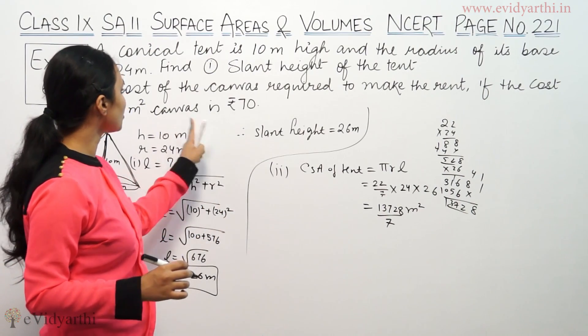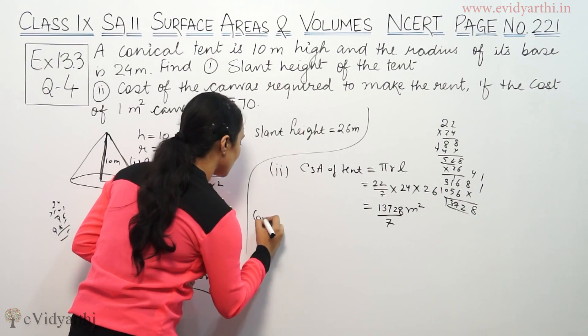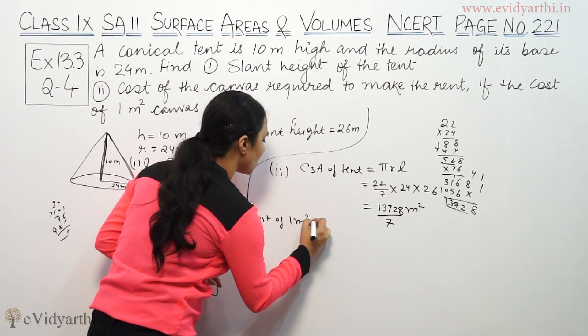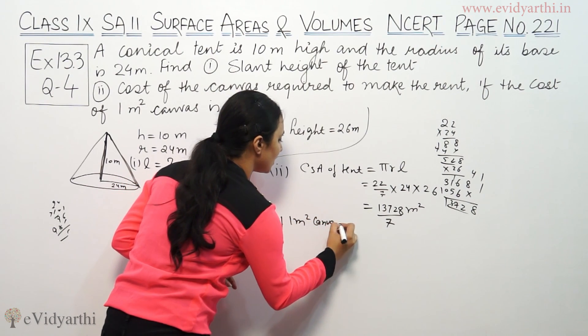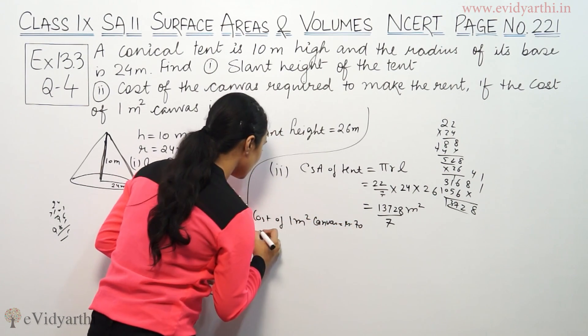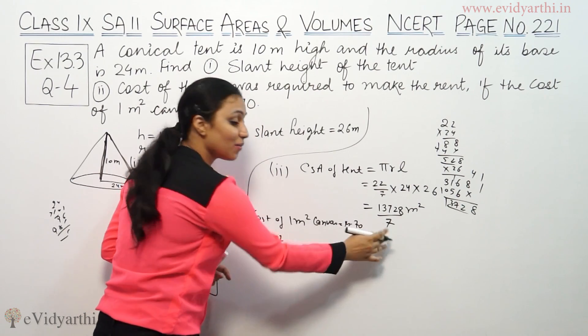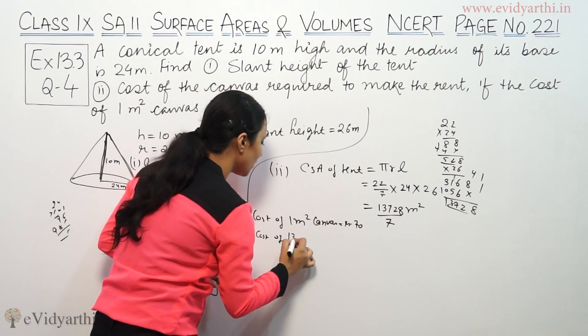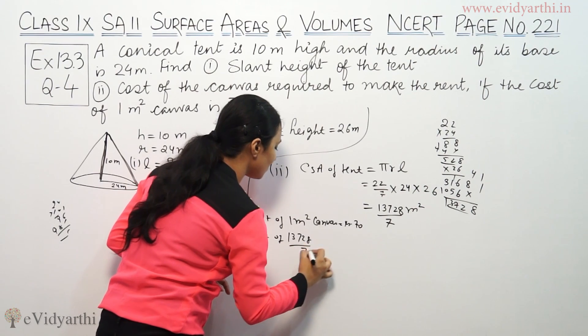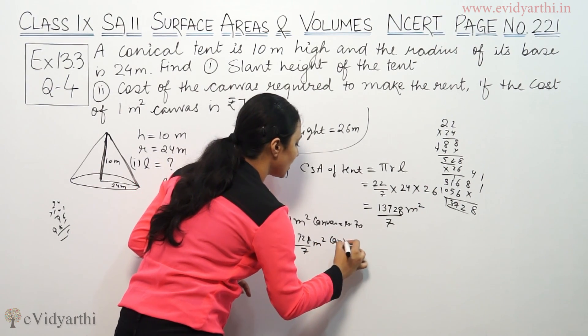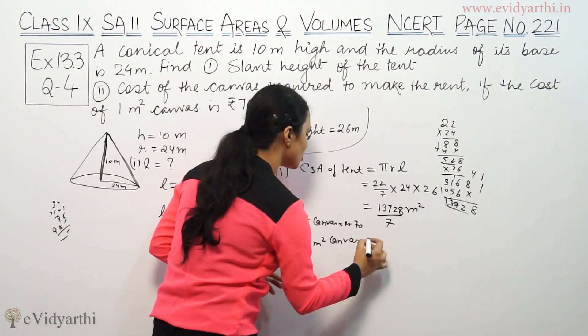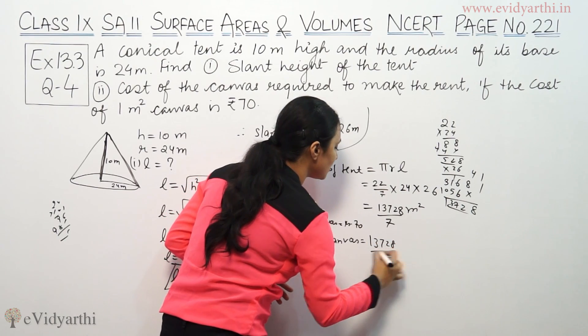The cost of 1 meter square canvas equals 70 rupees. So the cost of the total canvas area is 13,728 divided by 7, then multiplied by 70.